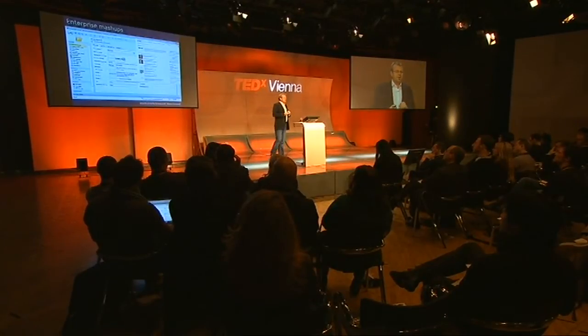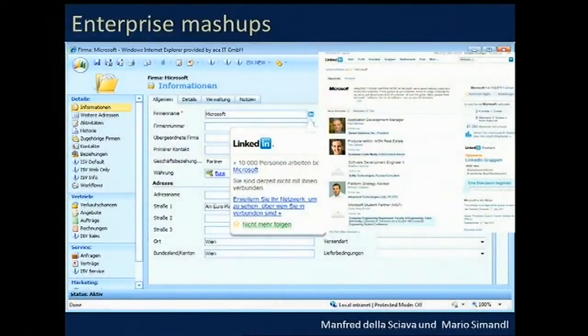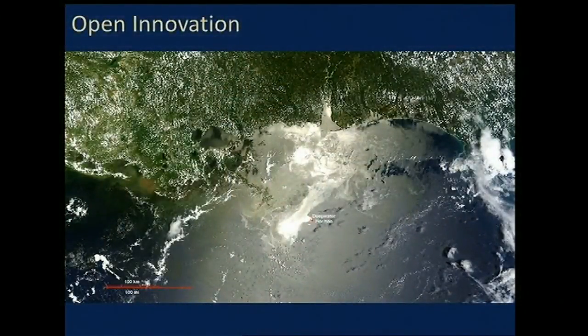Let me give you a couple of examples. For instance, enterprise mashups — that's something which can be really helpful. If you think of a CRM system connected to social networks like LinkedIn or others, it's possible to enrich intranet information from outside. Or think of open innovation projects: a very exciting one was from British Petroleum — they received over 40,000 ideas on how to clean up the oil spill. Only a few dozen were realized, but they opened up to the community and gained a lot of information and ideas from the outside.